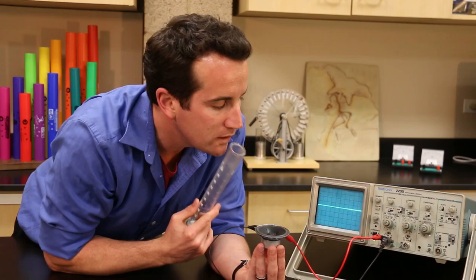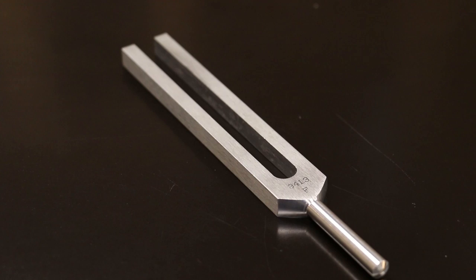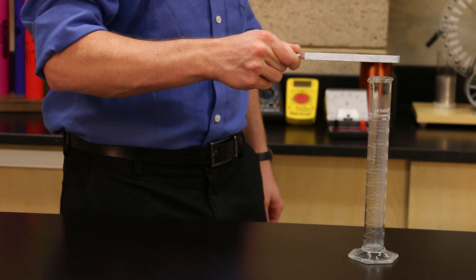You can verify this on an oscilloscope. Or, if you have a 341.3 hertz F tuning fork, it will resonate when held vibrating over the tube. Hey, a perfect match.